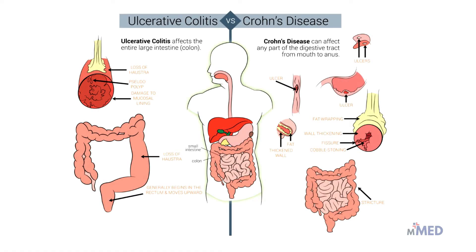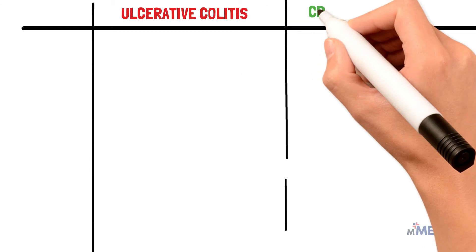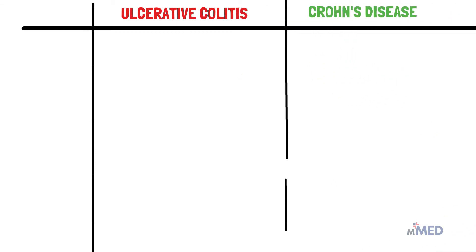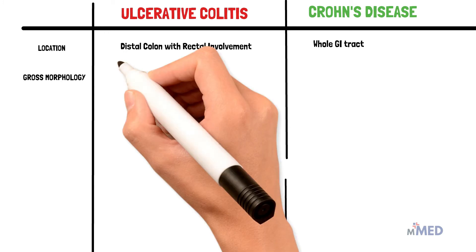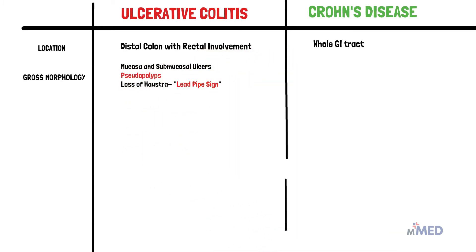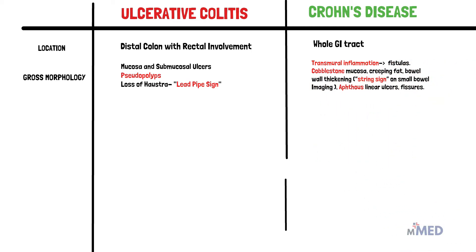A summary of pathological differences between ulcerative colitis and Crohn's disease: ulcerative colitis affects the distal colon with rectal involvement, while Crohn's disease involves the whole GI tract. In ulcerative colitis, gross morphology shows mucosal and submucosal ulcers with pseudopolyps and loss of haustra leading to the lead pipe sign. In Crohn's disease, transmural inflammation involves all layers of the GI tract, causing fistulas, cobblestone mucosa, bowel wall thickening, the string sign due to strictures, and aphthous ulcers and fissures.